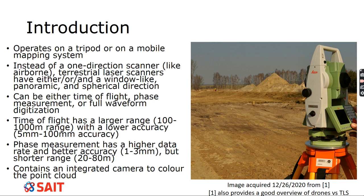Instead of being one-directional like airborne scanning, terrestrial laser scanners are truly three-dimensional. An airborne scanner is one directional, but terrestrial laser scanners are not — they're really three-dimensional. The three-dimensional terrestrial laser scanners allow you to set a window, send a panoramic view, or set a spherical direction.